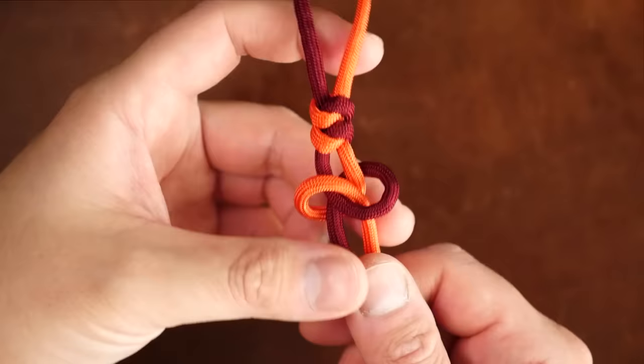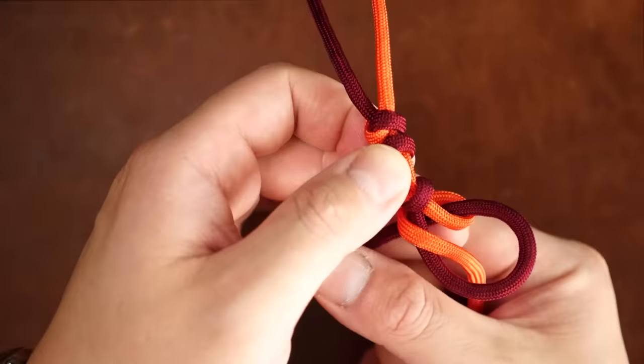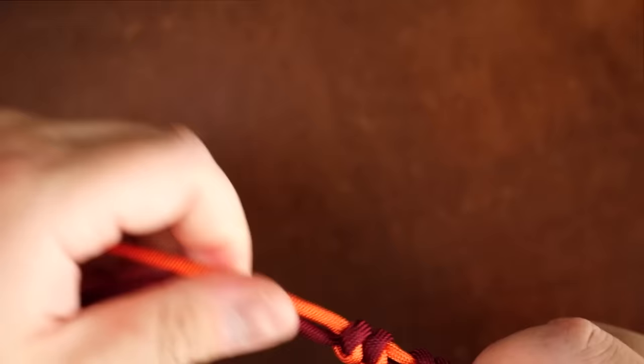So here you can see the difference between the two directional snake knots. And if you didn't have two colors, you might not notice the difference. But they do in fact look different, as you can see here, and can be confusing for those starting out and not realizing why their snake knots look different.